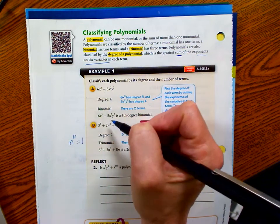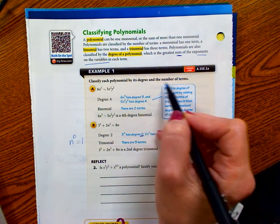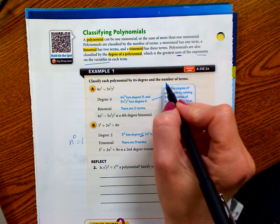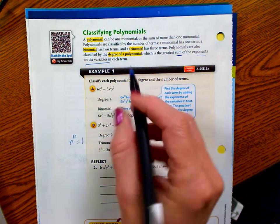So I know that sounds confusing, but it's the sum of the exponents on the variables of each term. So we're going to look at both examples here. Classify each polynomial by its degree and the number of terms.